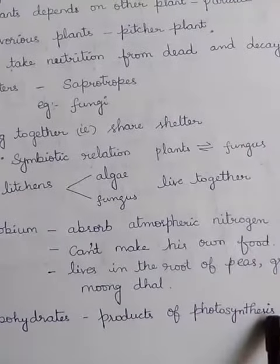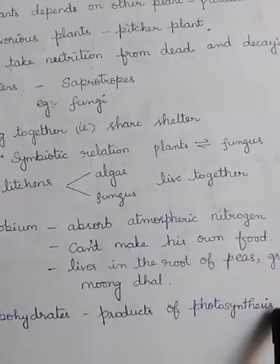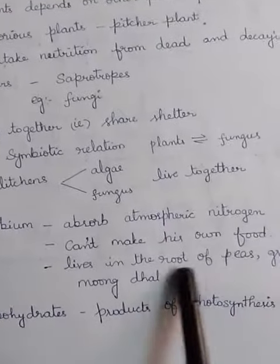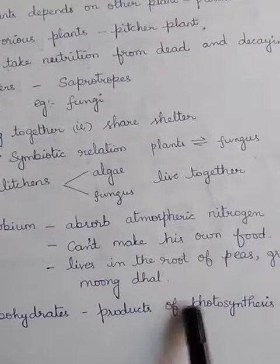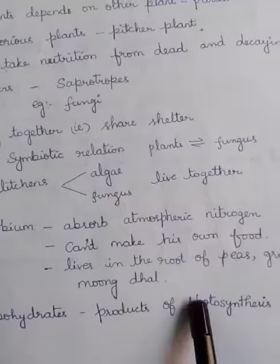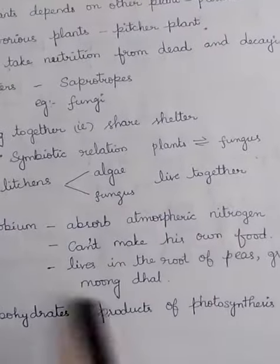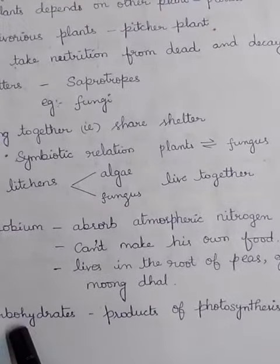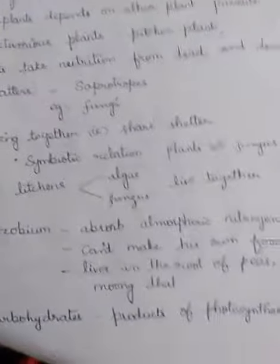Carbohydrates are the products of photosynthesis. In the photosynthesis process, plants produce carbohydrates.